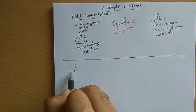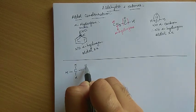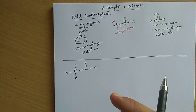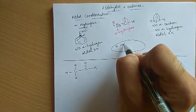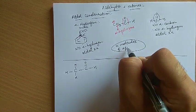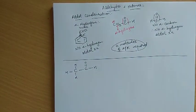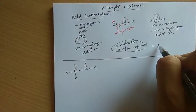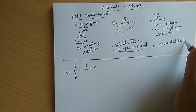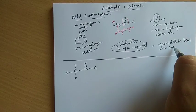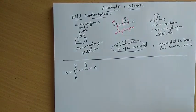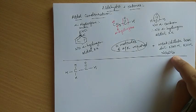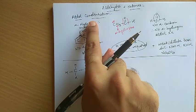In aldol condensation, normally two molecules of aldehydes or ketones are required. The second thing to understand is the reagent needed: it is a weak base or a dilute base — dilute NaOH, KOH, or Na2CO3. All of these in their dilute form are used, and these reagents help us carry out aldol condensation.